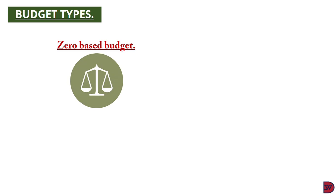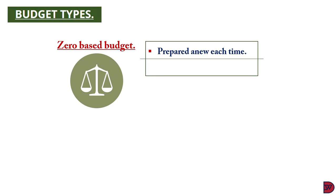Types of budgets: the first is zero-based budgeting. With this type, the budget is prepared from scratch rather than being built upon a prior one. Every budget is developed as if it is the first time. All projects are ranked and resources allocated based on their viability and justification. This drives managers to constantly look at their activities with fresh eyes, free from prior years' assumptions and budget targets. It is appropriate for businesses whose activities differ significantly or who plan to embark on a totally new project.